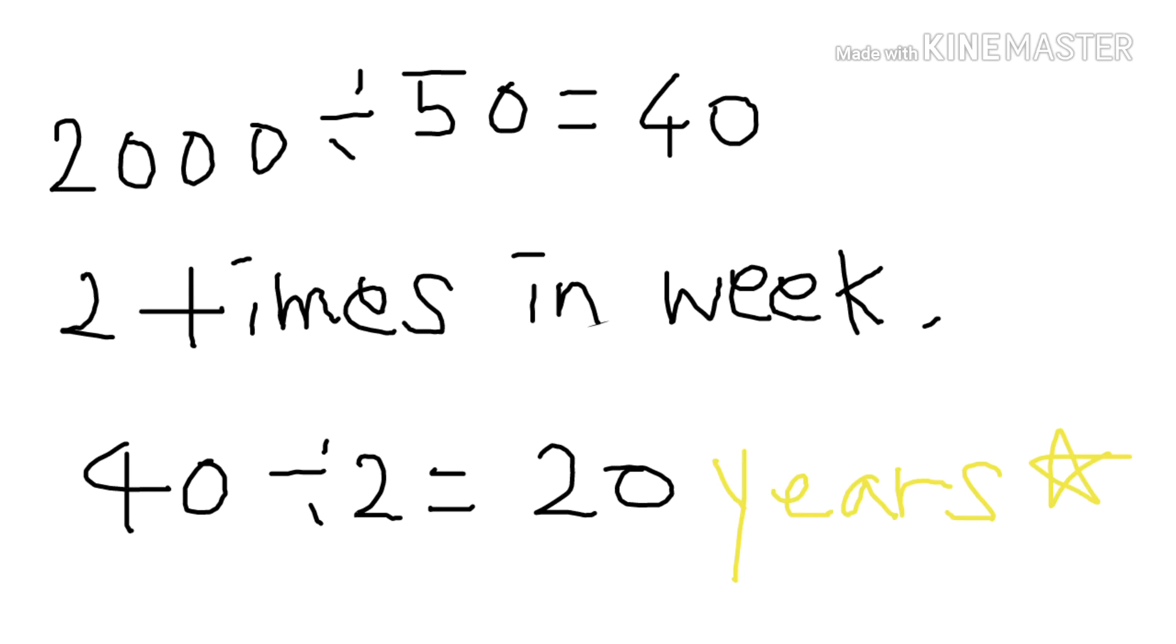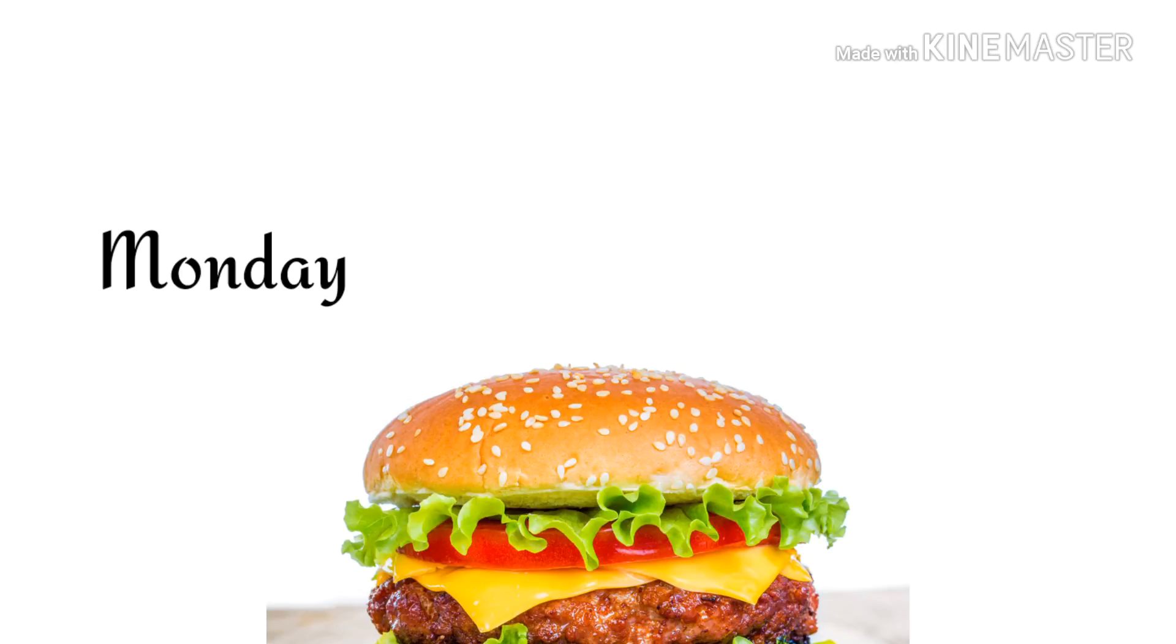$2,000 divided by $50 is $40. We want to share two times a week. $40 divided by $2 is $20. We will share on Monday and Friday.